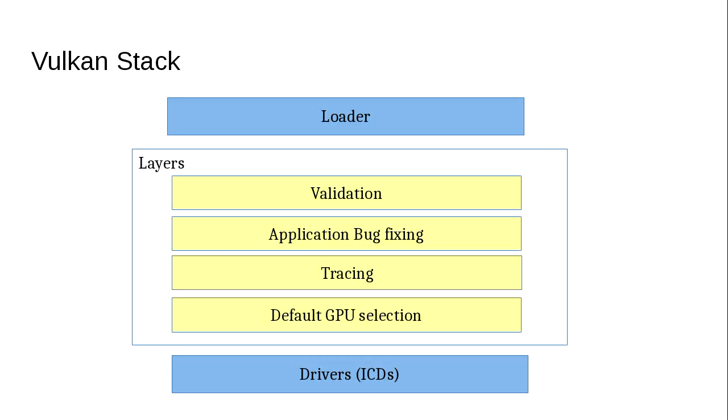Other things like tracing — you can plug in a layer that takes every API call, pipes it out to a file, still passes it through to the driver. And another thing like default GPU selection: you can load up all the drivers for all the graphics cards in your machine and then the layer can be used to pick one as the first one in the list, which most applications will use. It's a different model than OpenGL where all of that layering stuff is in the driver. The key benefit is you can turn layers off — you're developing a game, you think it's working, you ship it, and your users don't run the validation layer anymore, so they don't have that CPU overhead.